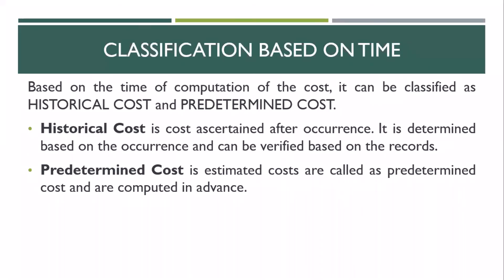Predetermined costs are those you can estimate even before the activity has commenced. For example, if you decide to go to a multiplex to watch a movie, even before the activity takes place, you know the cost: a ticket is 120 rupees, one packet of popcorn is 50 rupees — you can anticipate and estimate the cost well in advance. Such costs are called predetermined costs. Based on the timeframe of computation, costs can be classified as historical or predetermined.